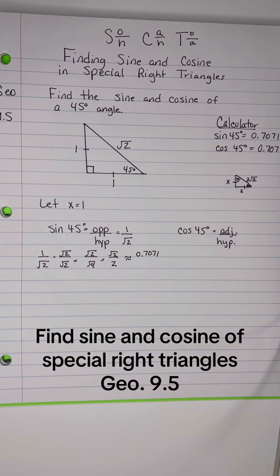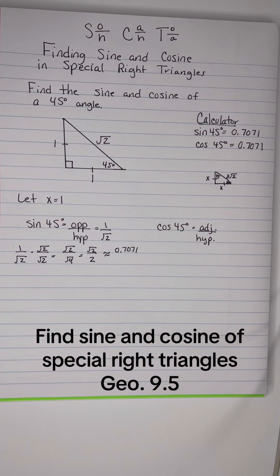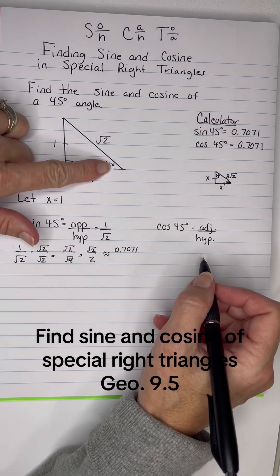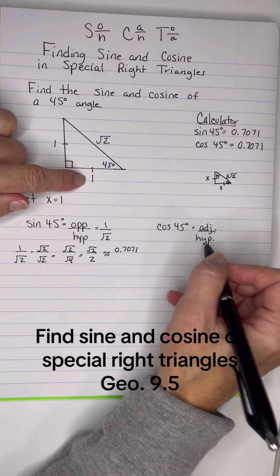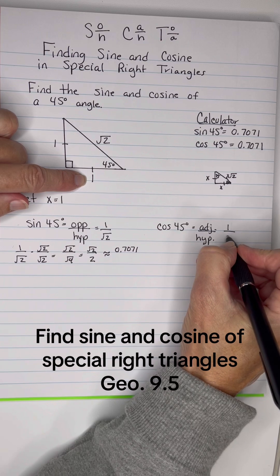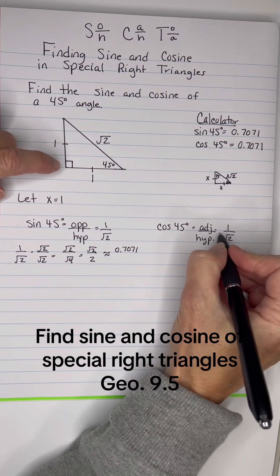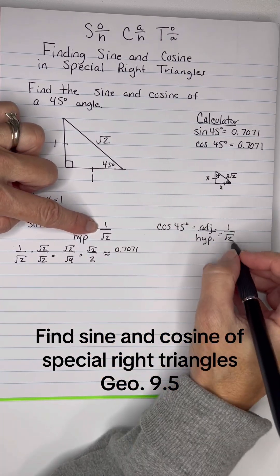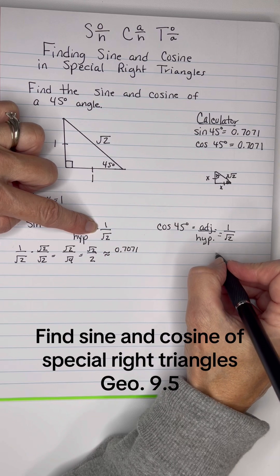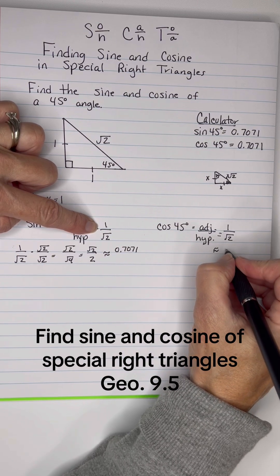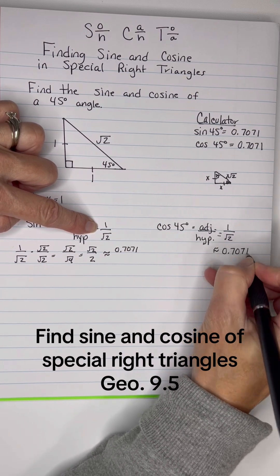All right, now let's look at the cosine one. The cosine of 45 is adjacent over hypotenuse. Well, the adjacent is 1 over root 2, which is what we just got through doing. 1 over root 2, we just decided, was approximately 0.7071.